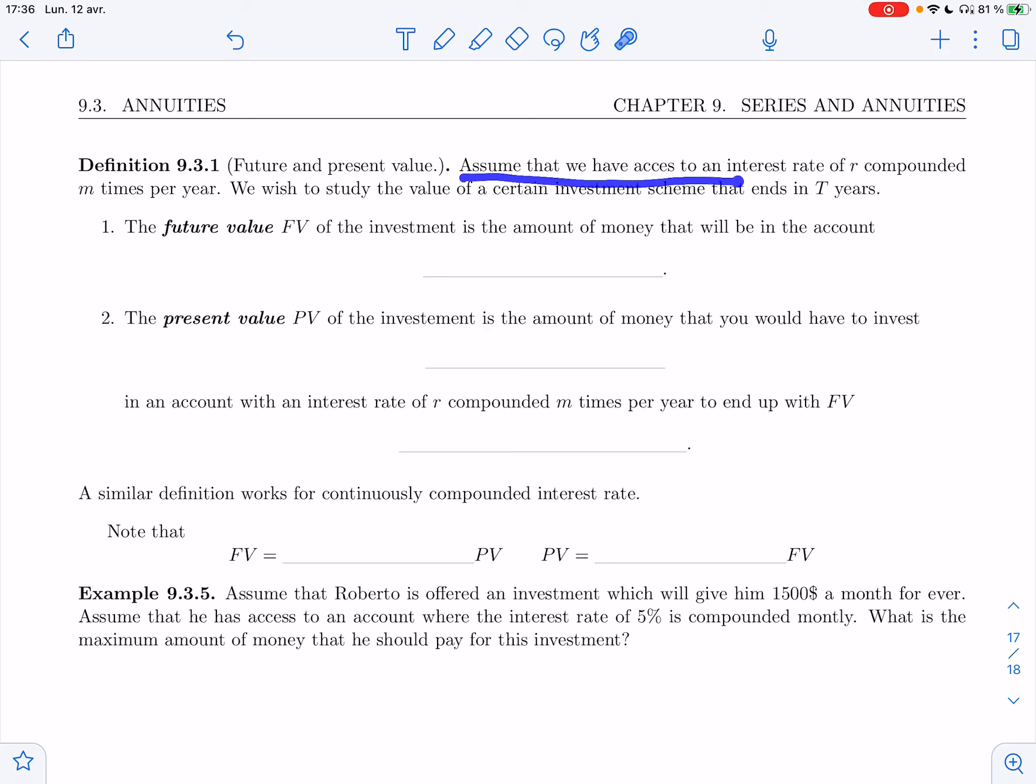Assume that we have access to an interest rate of R compounded M times a year. We wish to study the value of a certain investment scheme that ends in T years. The future value, FV, of the investment is the amount of money that will be in the account in T years.